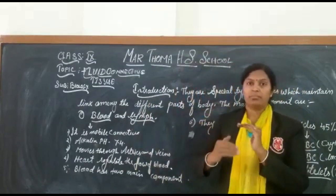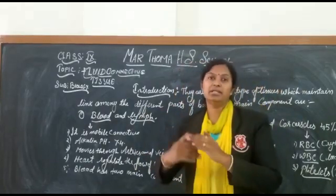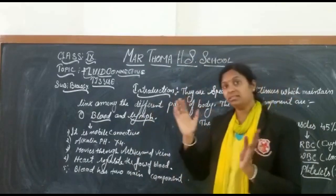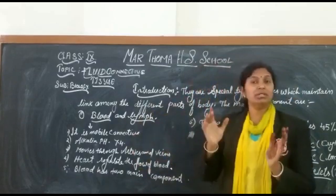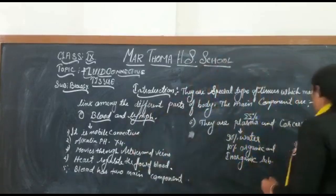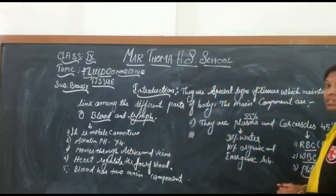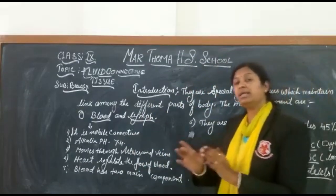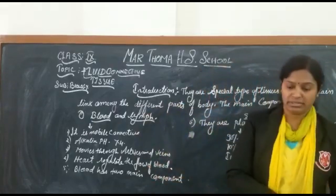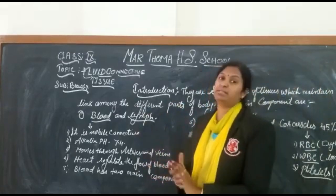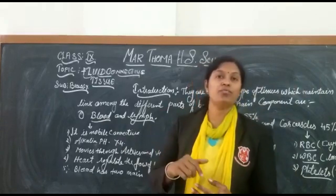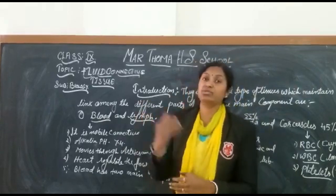The lifespan of RBC is about 120 days, after which they die and new RBCs are generated in the body. WBCs are divided into two types: granulocytes and agranulocytes. Granulocytes are further of three types: neutrophils, basophils, and eosinophils.